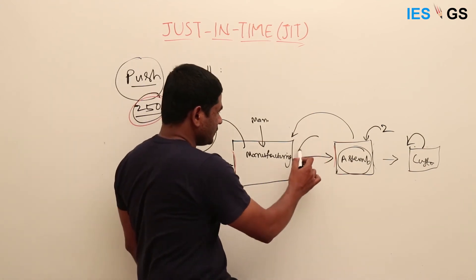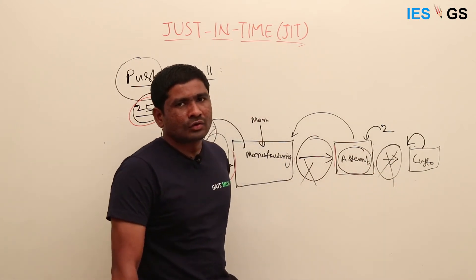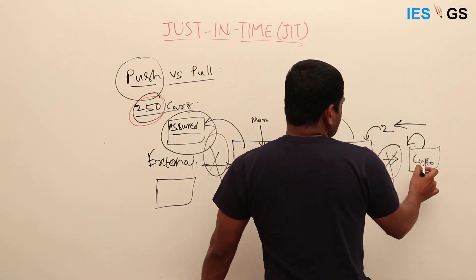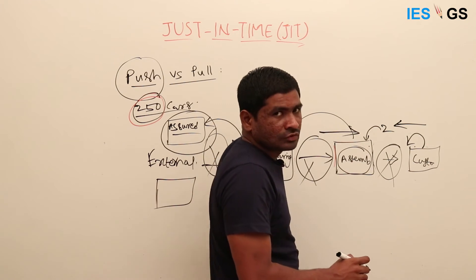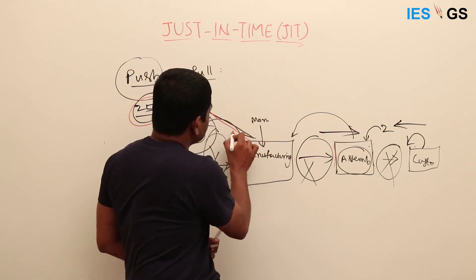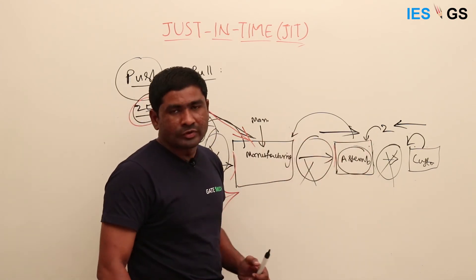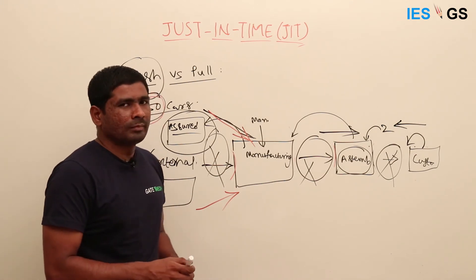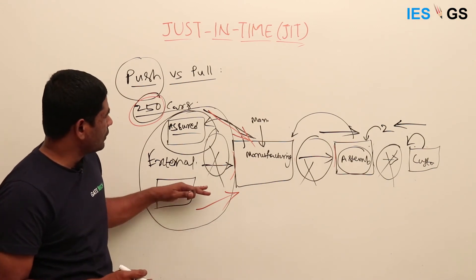In the pull system, there is no inventory at the raw material stage, no inventory at manufacturing, no inventory at assembly — everything flows as needed. Every time we are pulling from the previous stage: the customer wants two cars, assembly pulls parts from manufacturing, manufacturing pulls raw material from suppliers. We are always pulling based on demand from the end. The main difference from the push system is that we reduce inventory in our premises, but we must have assured suppliers.